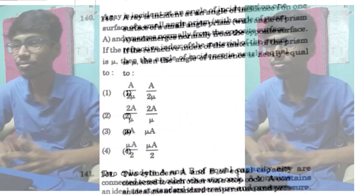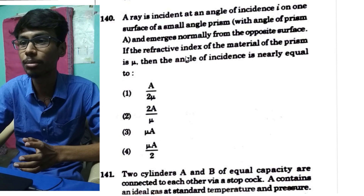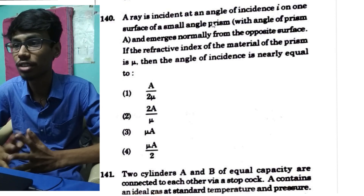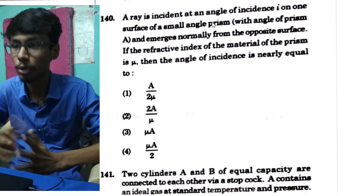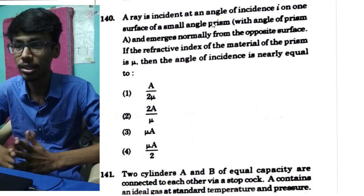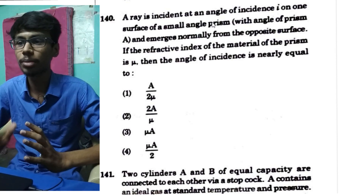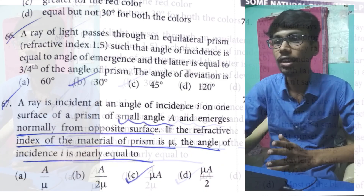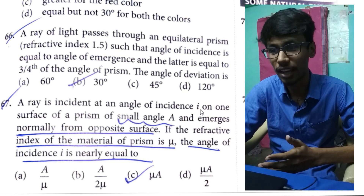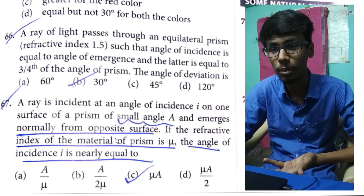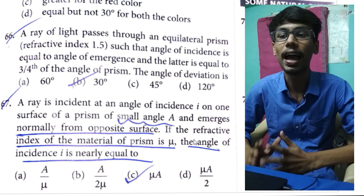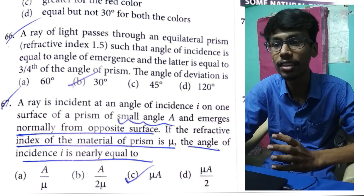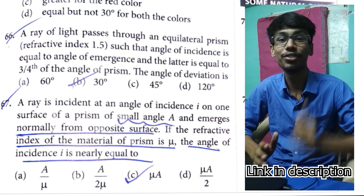So you have to look at the other questions. Question number 140, Paper E1 code: A ray is incident at an angle of incidence i on the surface of a small angle prism and it emerges normally from the opposite surface. If the refractive index of the material of the prism is mu, then the angle of incidence. So the angle of prism is the topic. You have to look at the refractive index. Question number 67 is the same question: a ray is incident at angle i on small angle prism A, emerges normally, refractive index is mu — same question, even the options are the same. This question is also from Objective NCERT Fingertips for physics.